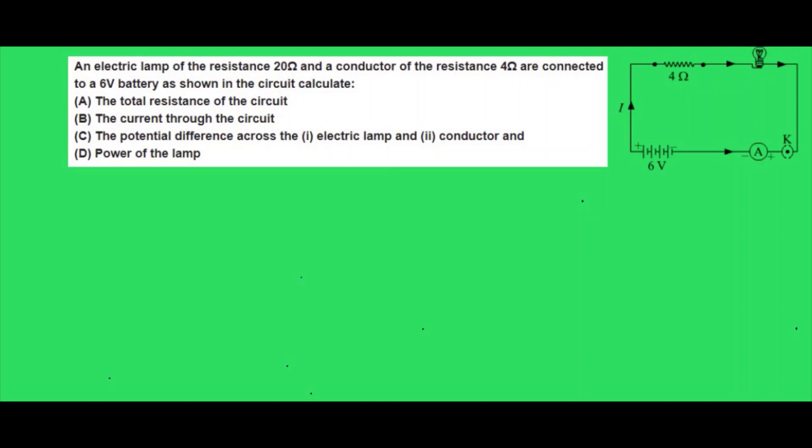Hello students, welcome back. Let's take up the next question — a numerical from electricity. An electric lamp of resistance 20 ohm and a conductor of resistance 4 ohm are connected to a 6 volt battery as shown in the circuit. Calculate the total resistance, the current through the circuit, the potential difference across the electric lamp and the conductor, and the power of the lamp.